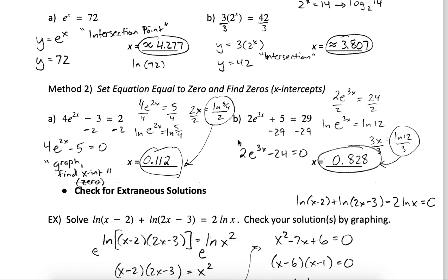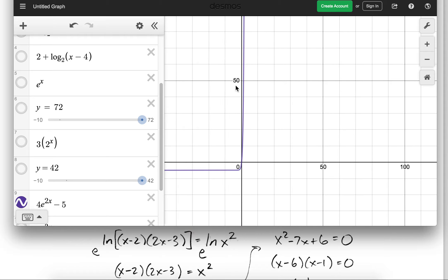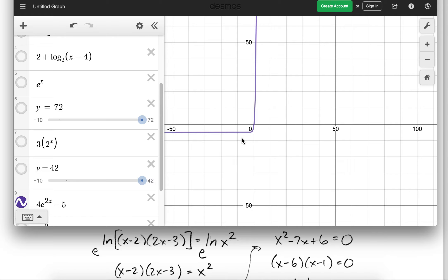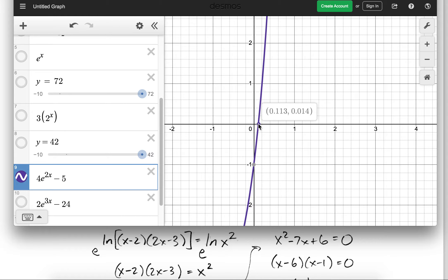Another graphing approach is to find zeros or x-intercepts. If we set our equation equal to zero by moving everything to one side, we can look at the x-intercepts of the graph — those will be our solutions. So subtracting 2 from both sides removes everything from the right side, setting it equal to zero: 4 times e to the 2x minus 5 equals zero. Graphing that, it crosses the x-axis at about x equals 0.112.